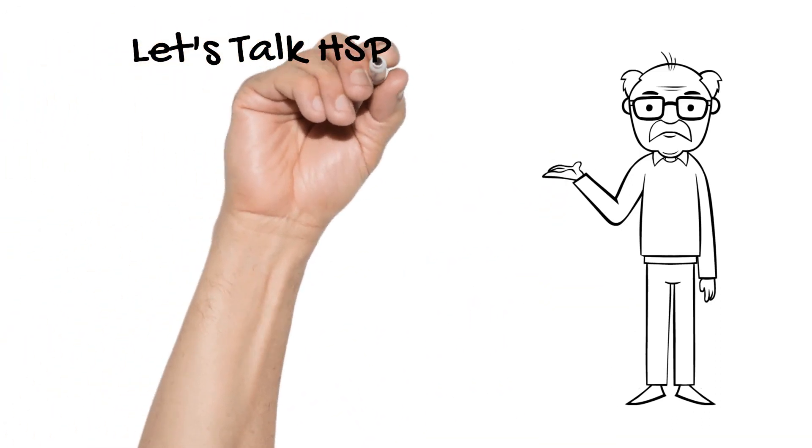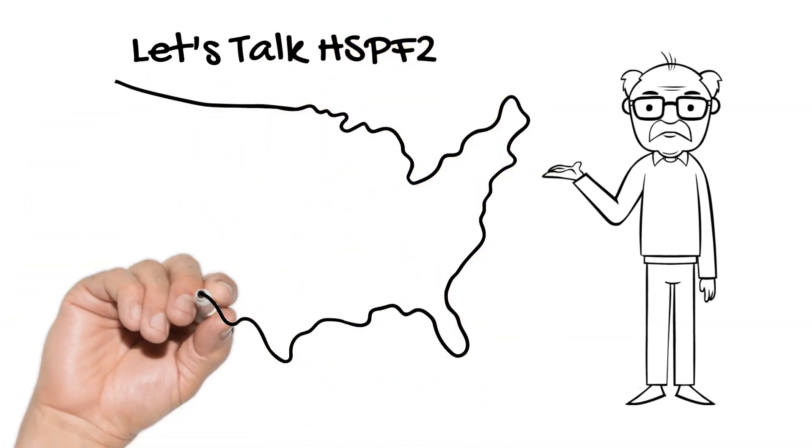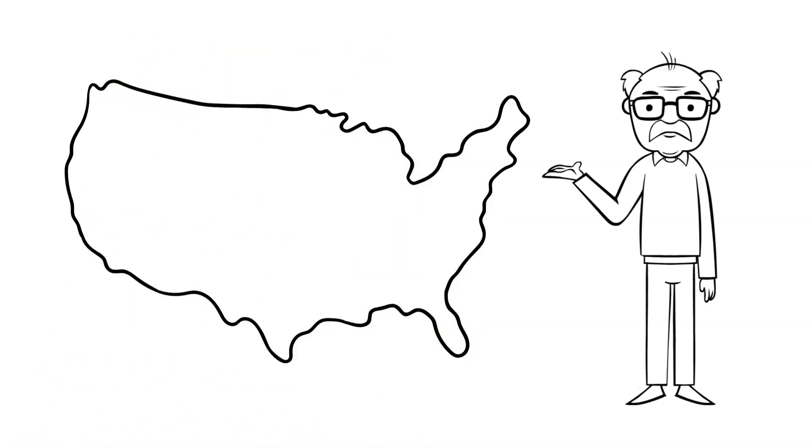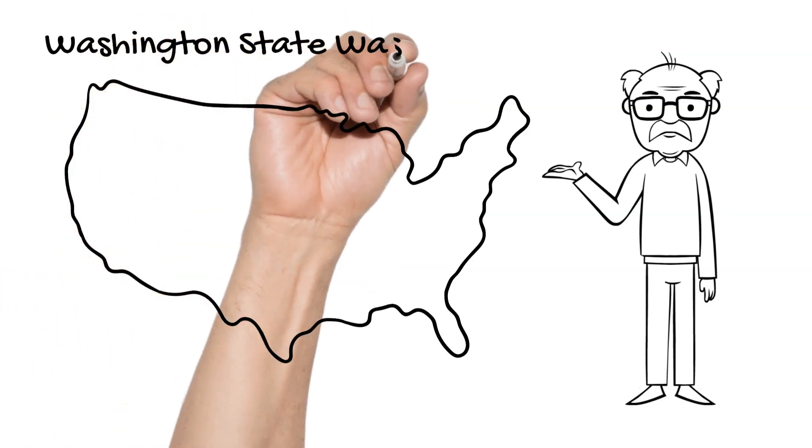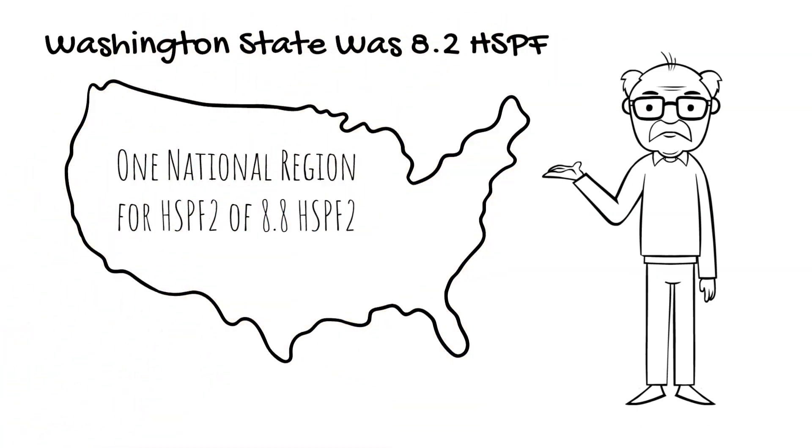Let's talk about HSPF2. Unlike SEER2, there is one national region for the minimum HSPF2. Washington State was 8.2. The new national minimum is 8.8 HSPF2.